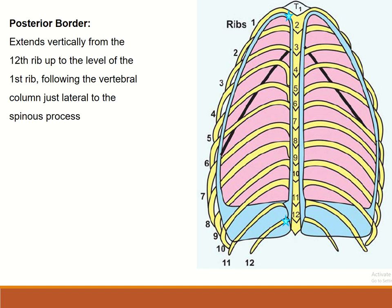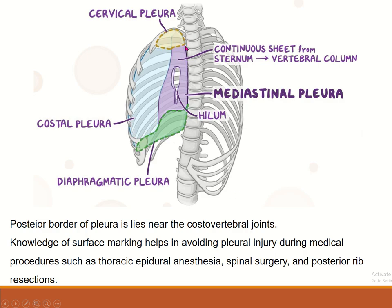The posterior border extends from the twelfth rib to the first rib, situated just lateral to the spinous processes of the thoracic vertebrae. It is related to the costovertebral joint. Knowledge of the surface marking of the posterior border helps avoid pleural injury during procedures like thoracic epidural anesthesia, spinal surgery, and posterior dissection.